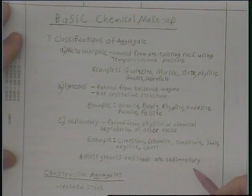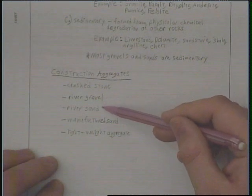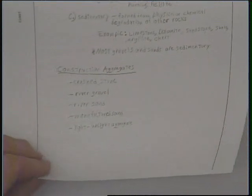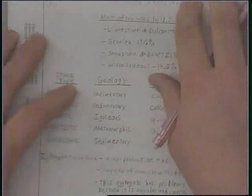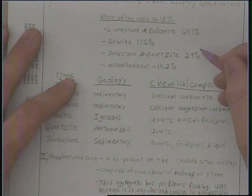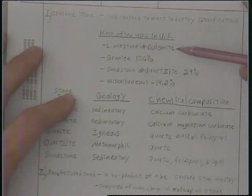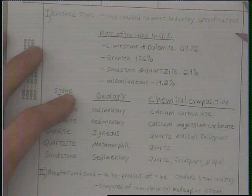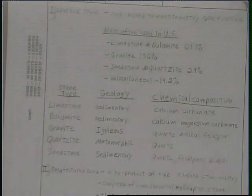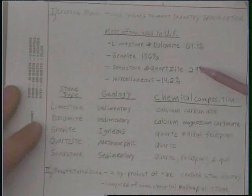Most construction aggregates are crushed stone, river gravel, river sand, manufactured sand, and lightweight aggregate. Crushed stone is simply rock crushed to meet an industry specification. Limestone and dolomite make up almost 70% of aggregates used in the United States, and granite makes up almost 14%, with some sandstones and others making up the rest.